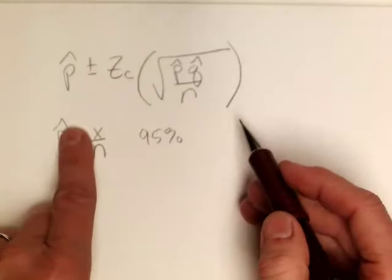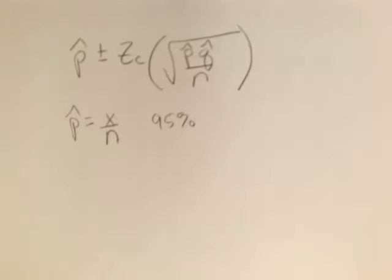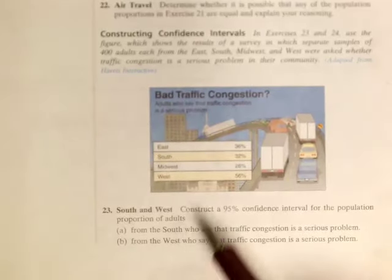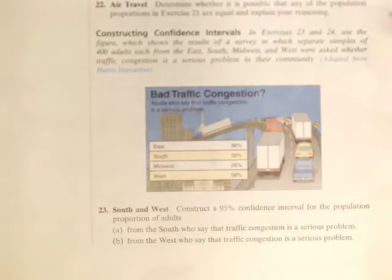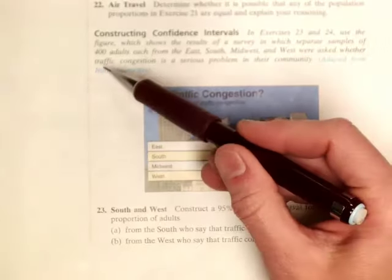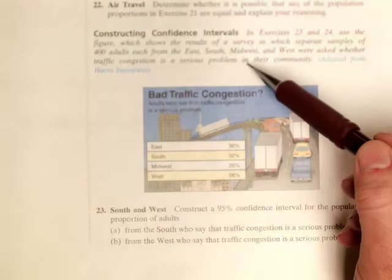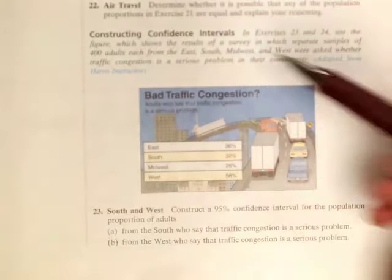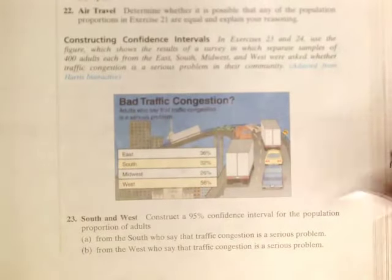So we're going to be calculating a 95% confidence interval. You're welcome to do this one by hand, but to save time, I'm going to go ahead and do this in the calculator. So let's go ahead and answer the first part. The graph or the figure shows the results of a survey in which separate samples of 400 adults each from the east, south, midwest, and west were asked whether traffic congestion is a serious problem. So our sample size is 400 for all four categories.